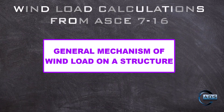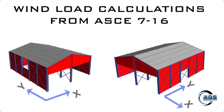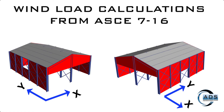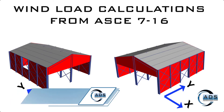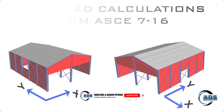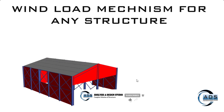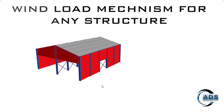Let's first understand the general action of wind loads on any structure. For example, this is a structure and these are the reference axes. Wind may flow in any direction regardless of any axis, but as designers we always try to find out the worst effect, so we consider two main directions for wind flow in which the wind gets maximum affected area of the structure — these two directions are the principal axes of the plan of the structure, which are X and Y in this case. When wind flows on any structure, it hits the surface externally, and if the structure has openings in the walls, then wind will enter into the structure as well.